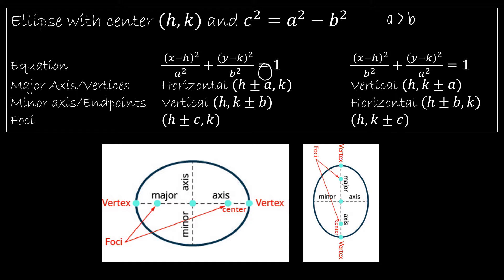You can find the endpoints of the major axis, which are also called the vertices, by adding a to the center value. So if the major axis is horizontal, this distance is a. If the major axis is vertical, this distance is a. The length of the minor axis, half of it, the radius of the minor axis is b. Same thing if it's oriented the opposite direction.